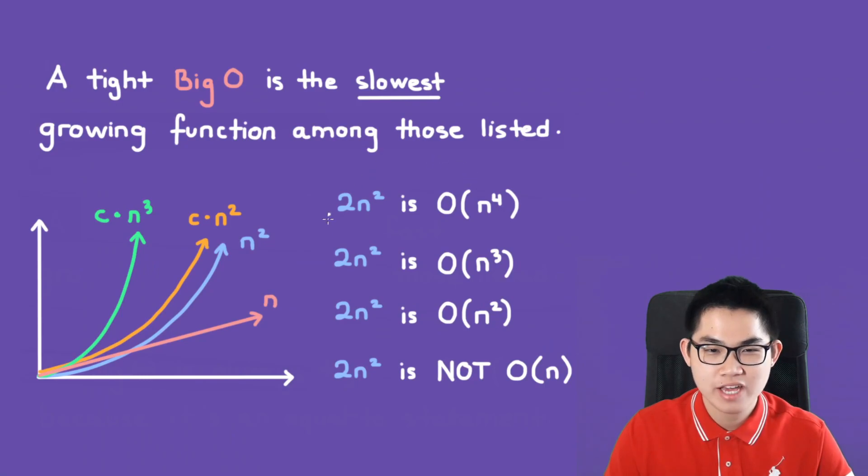For example, let's say you're given multiple choice and you have to select which one is tight big O. So here we have 2n² is O(n⁴), 2n² is O(n³), 2n² is O(n²), and 2n² is not O(n).